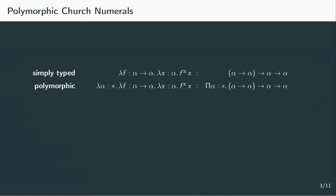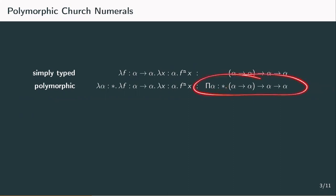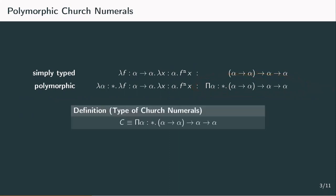Since lambda 2 gives us polymorphic types, we can use those to define polymorphic church numerals that work on arbitrary types. In order to construct such a polymorphic church numeral, we just add a type abstraction over alpha in front of the church numeral term. We're going to use the symbol cn for the polymorphic church numerals, or just the numbers 1, 2, up to n if that's clear from context. We also need to add a type abstraction in the type of polymorphic church numerals, and we abbreviate this type with the capital letter C. From a polymorphic church numeral, we can get simply-typed church numerals depending on any type by applying a type to it.